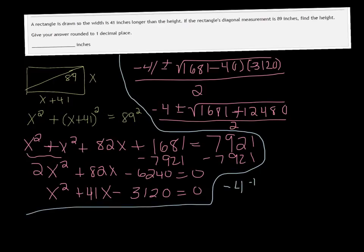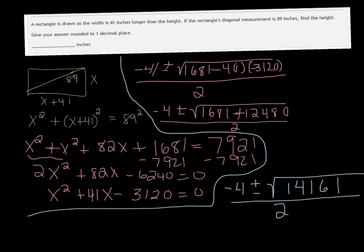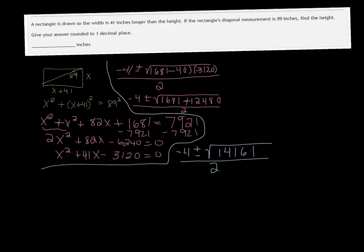Alright, now I've got negative 4, plus or minus. I'll add those two together. One, 14,161. Let's take the square root of that. And it does work out to just be 119, so that's good. So, negative 4, plus or minus 119, all over 2.